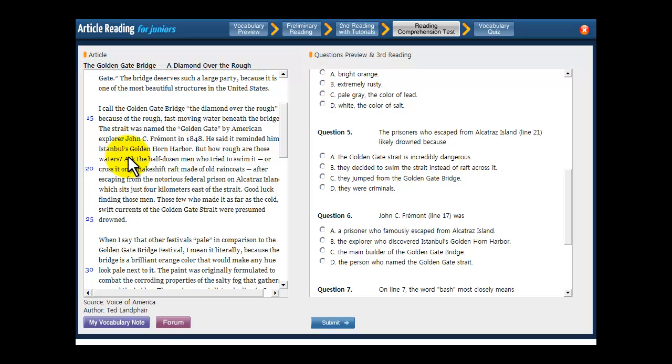So they probably drowned because the currents in the Golden Gate straight, which is a body of water, were cold and swift. So the water is really dangerous there. And it also mentions that up above the quoted portion, but how rough are those waters? And it also says it here in line 15, the rough, fast moving water. So three times in that paragraph, it tells us that the water is rough and fast moving. And that's probably what drowned these guys who escaped from Alcatraz. Let's look at the choices. A, the Golden Gate straight is incredibly dangerous. That sounds pretty right, because it says the water in the straight is really rough. Let's choose A, but let's look at the answers that follow it just to make sure there's nothing better. B, they decided to swim the straight instead of raft across it. Well, it does say that some of them used a raft right there. See that? So they did use a raft, but they still drowned. So it wasn't the choice between swimming and rafting. Both of them were super dangerous.